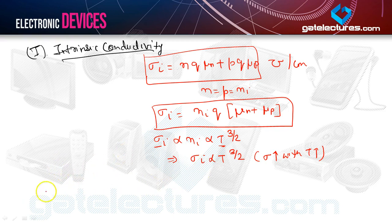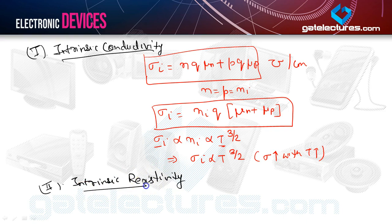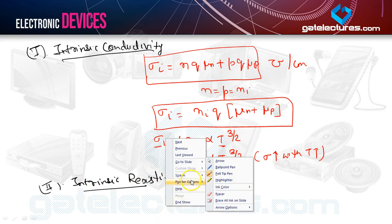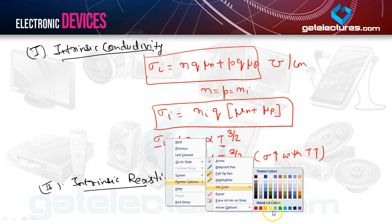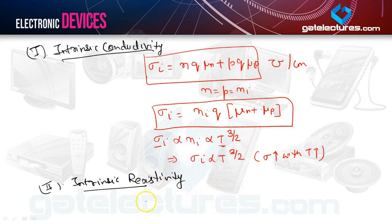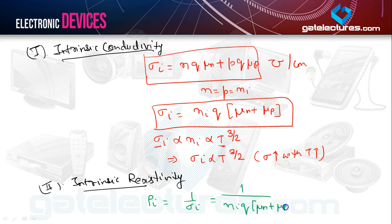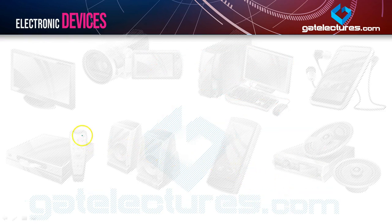Now let's move to the second topic: intrinsic resistivity. Intrinsic resistivity is defined as the reciprocal of conductivity. We denote resistivity by ρi = 1/σi = 1/(Ni·q·(μn + μp)). The unit will be ohm-centimeter — this is the resistivity of the material.